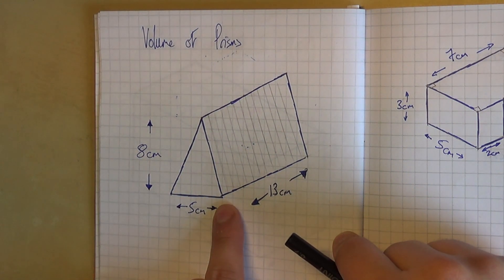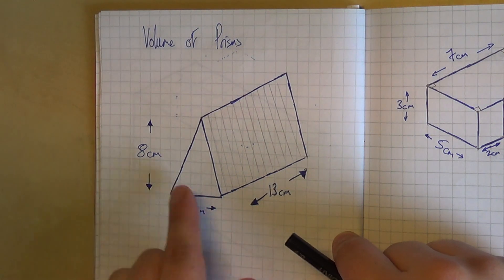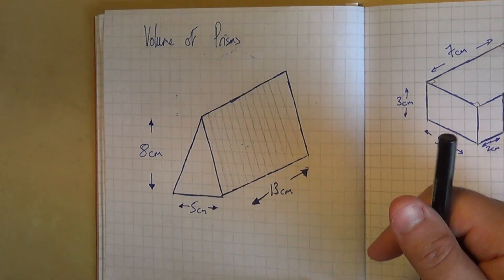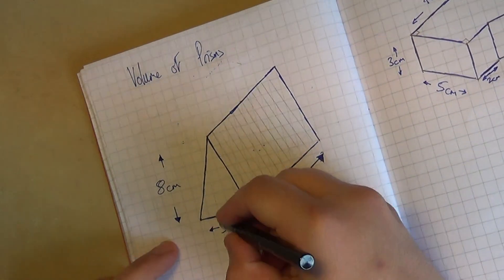Now if you recall from our volume of cuboids stuff, we thought about this in terms of layers of things we would count easily. And because this cross section is the same the whole way, all of its layers will be the same and they'll be this triangle.